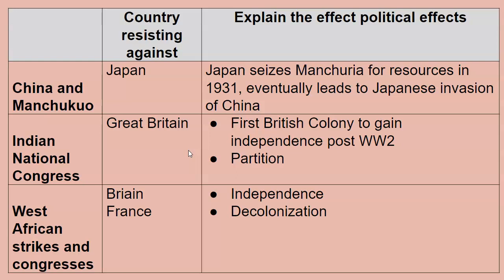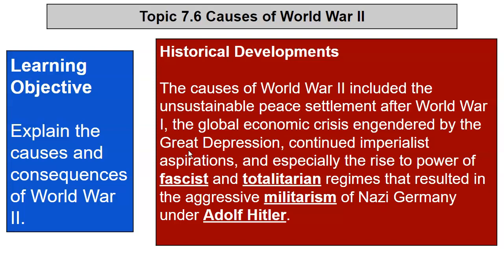Resistance movements that begin to crop up — China and Manchukuo resisting Japan because of the Japanese seizure of Manchuria, eventually leading to World War II with Japan and China fighting another war. The Indian National Congress is trying to gain independence from Great Britain — India will become the first colony to gain independence, leading to partition. The West African strikes and Congresses are the beginning of the independence movements in Africa.